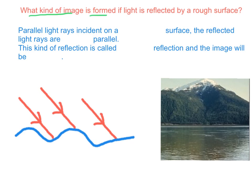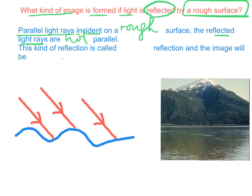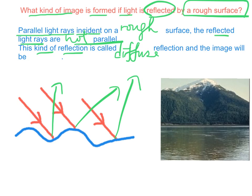What kind of image is formed if light is reflected by a rough surface? When parallel light rays are incident on a rough surface, the reflected light rays are not parallel. This kind of reflection is called diffuse reflection. And the image formed by diffuse reflection will be blurred.